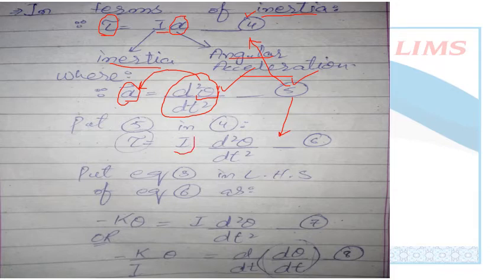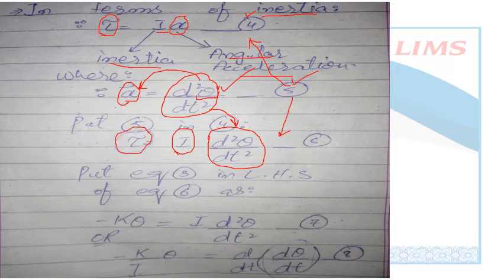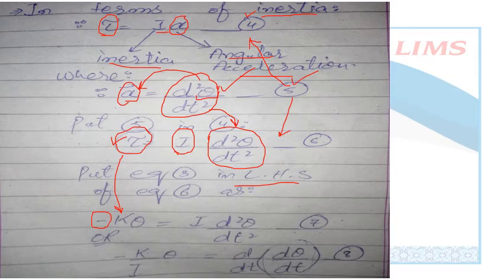In Equation 6, I remains as is, and alpha is replaced by d²θ/dt². Now we substitute the value of torque from the previous equation into the left-hand side of Equation 6. The restoring torque is −k·theta, so the left-hand side becomes −k·theta, and the right-hand side remains I·(d²θ/dt²). This gives us Equation 7.